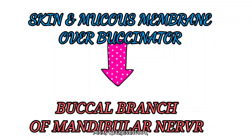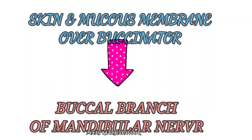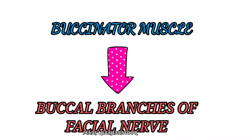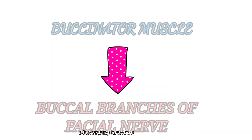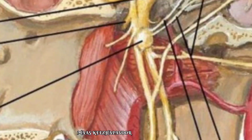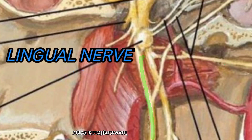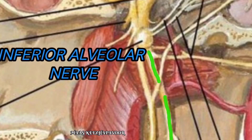The buccal nerve then pierces the buccinator and supplies the mucous membrane of the cheek and gum of the lower jaw opposite the molars and second premolar teeth. Remember: skin and mucosa over the buccinator are supplied by the buccal branch of the mandibular nerve, but the buccinator muscle itself is supplied by the buccal branches of the facial nerve.